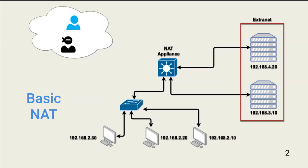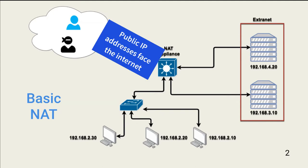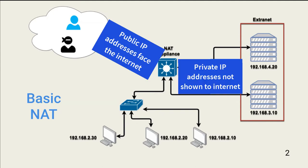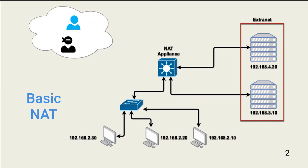Before we look at the uses of NAT and the associated advantages and disadvantages, we need to know how it works. In general, NAT shows a small set of IPv4 public addresses to the internet. The internal private addresses are not shown to the external entities. For more information on how IP networks and addressing work, see the video above. This accomplishes two things.